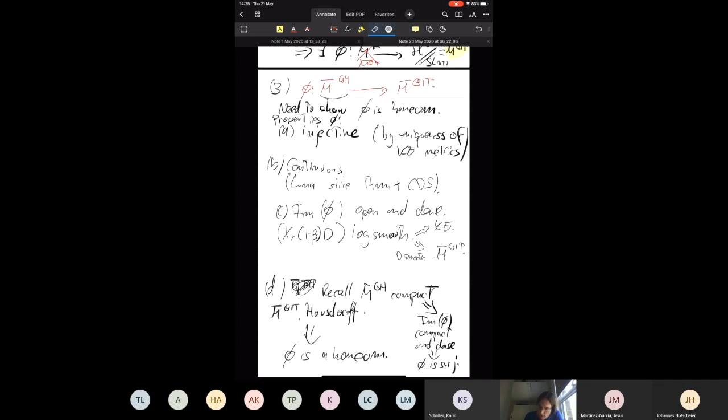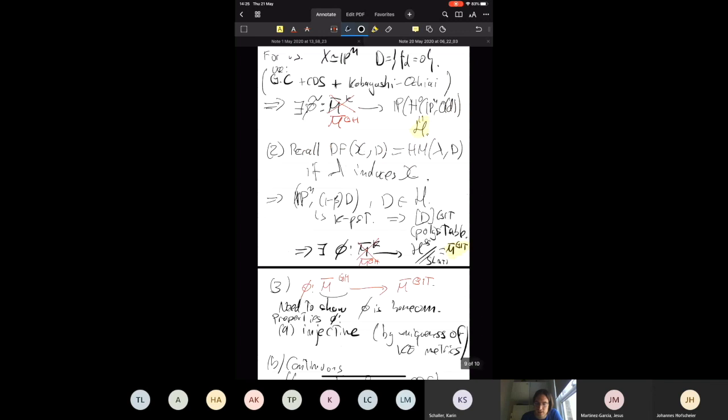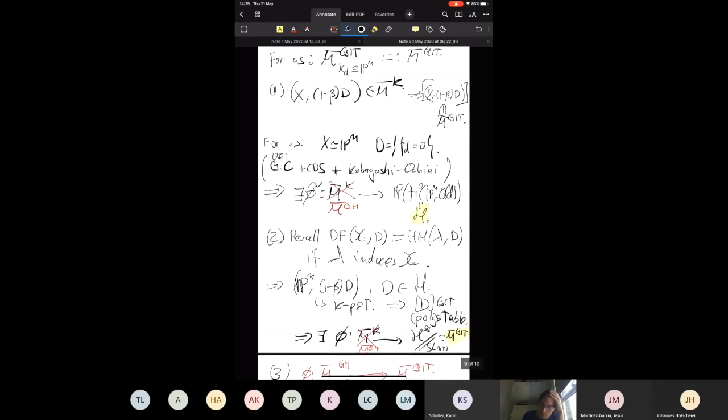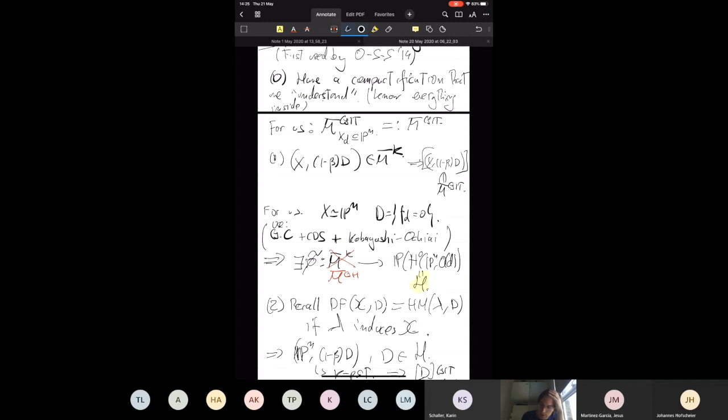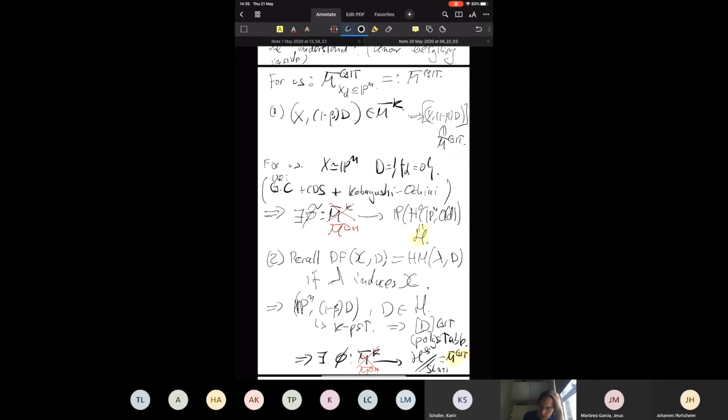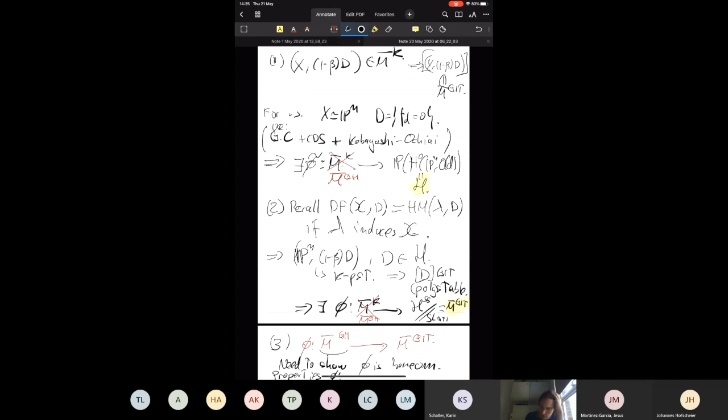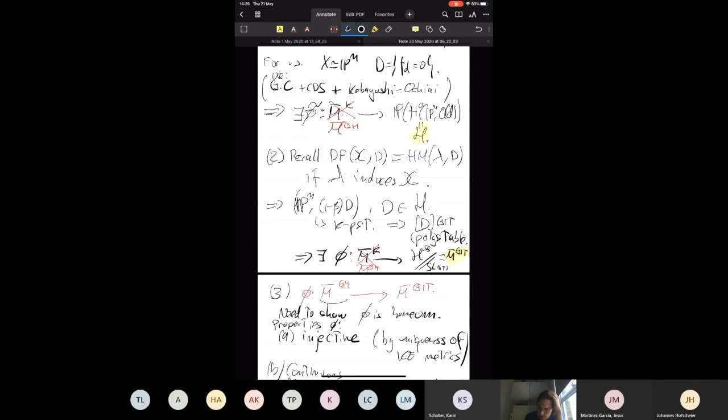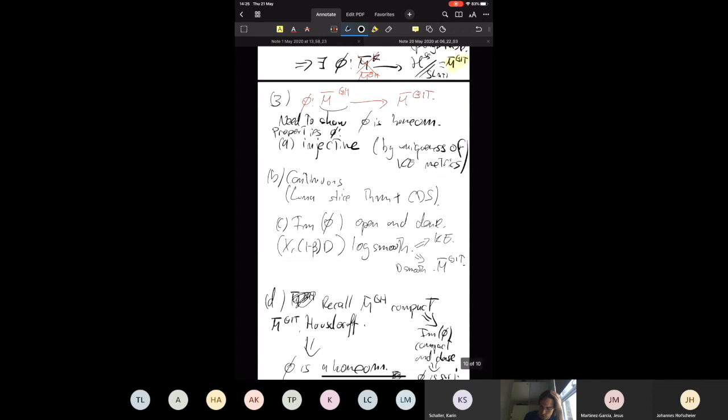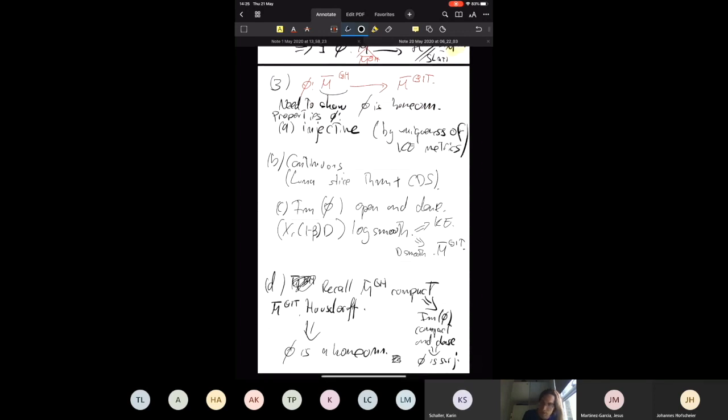We call it a method because a lot of these steps are the same in any proof where you want to characterize the K-polystable moduli. What really changes is part 0: to have a compactification that we understand—that depends on the problem. Part one, to get the map from K-stability to H, is also very specific. Two normally follows automatically from the definition of Donaldson-Futaki, and everything else is just following your notes through this chain of implications.